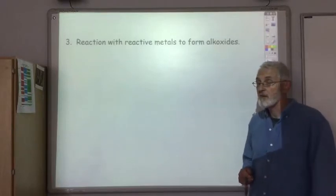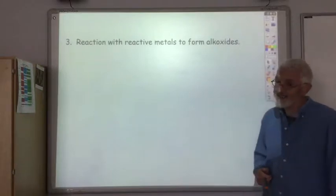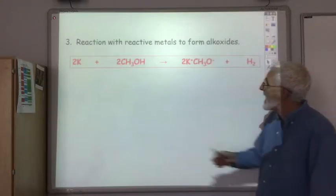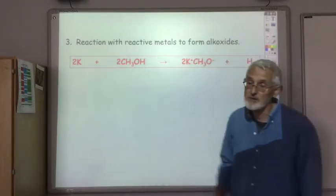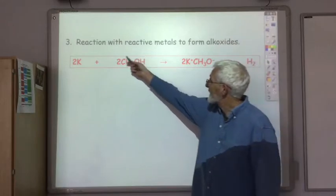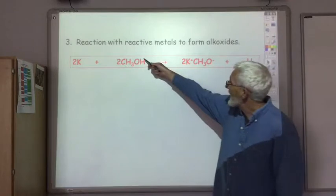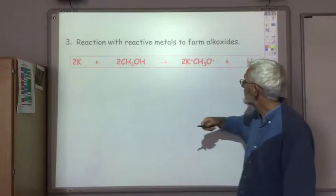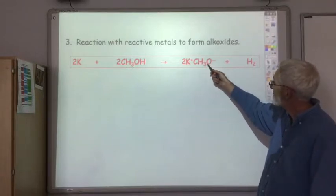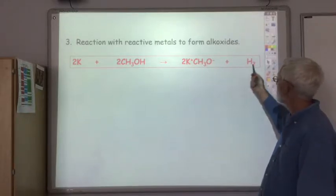Again something we briefly came across earlier on was the reaction of alcohols with reactive metals to form alkoxides. So your reactive metal, potassium in this case, could be sodium or any other alkali metal. And in this case we are reacting it with methanol. And we lose the hydrogen from the OH group. And we produce what's called the alkoxide ion which is the CH3O-. And this would be potassium methoxide plus hydrogen gas.